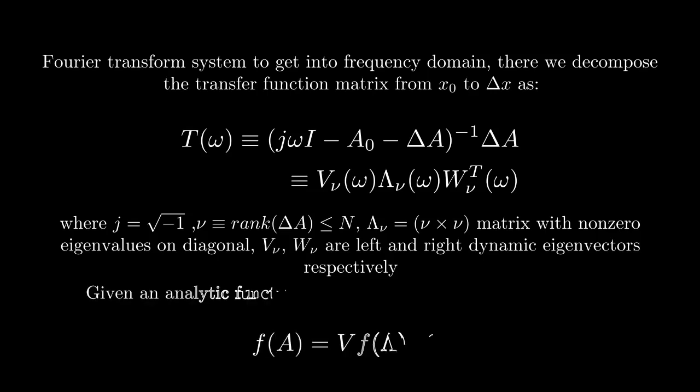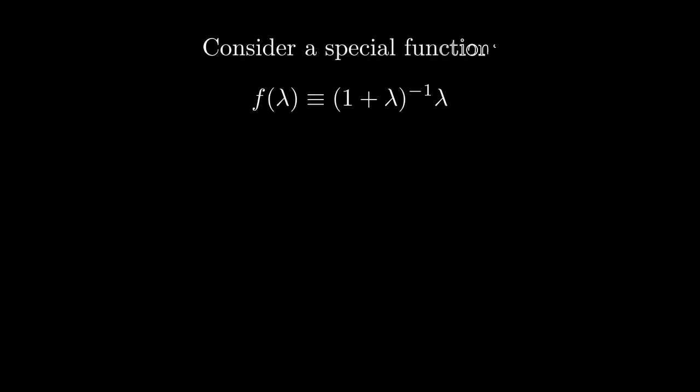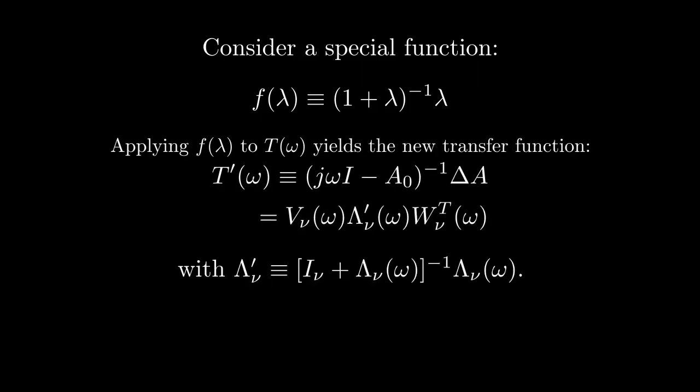An analytic function f(lambda), may operate on only the dynamic eigenvalues of A, just like a standard diagonalization. An analytic function f(lambda), defined as 1 plus lambda inverse times lambda. Apply that to the transfer function matrix to get T prime, a new transfer function matrix that eliminates delta A from the homogeneous part. However, we retain the same right and left eigenmodes as before. The eigenvalues have changed in a predictable way, I plus lambda inverse times lambda, just like our analytic function.